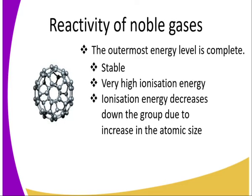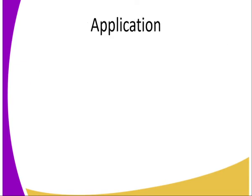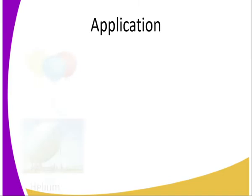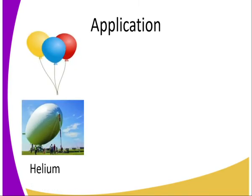Ionization energy decreases down the group as atomic size increases. Some of these atoms can react, but this requires application of a lot of energy in the form of heat to enable the reaction to take place. Since they are inert, let us look at some of the applications of these gases.